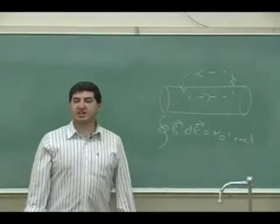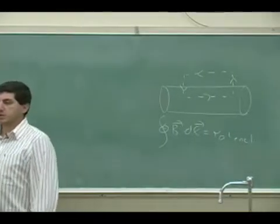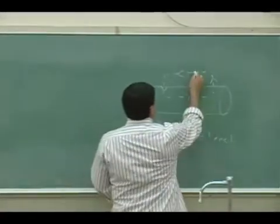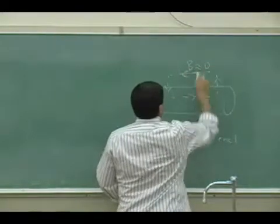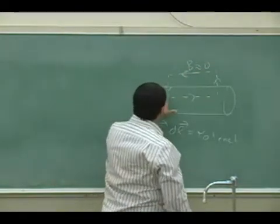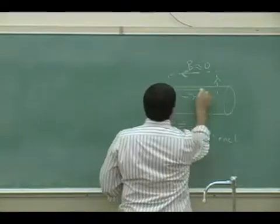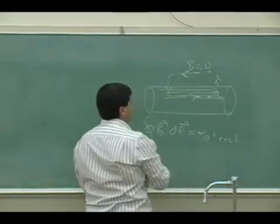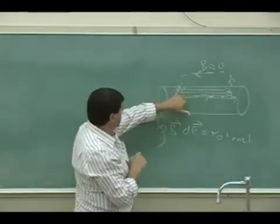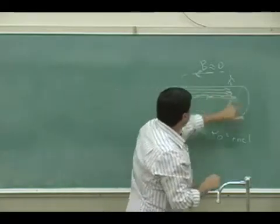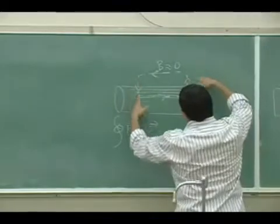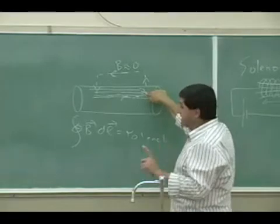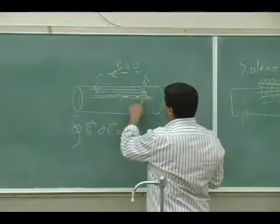Applying Ampere's law: the integral of B dot dl equals μ₀ times I enclosed. The magnetic field outside is already zero. The magnetic field inside points along the solenoid axis, so if I compute B dot dl along the top or bottom edges — perpendicular to B — the B dot dl is zero since the dot product at 90 degrees is zero.